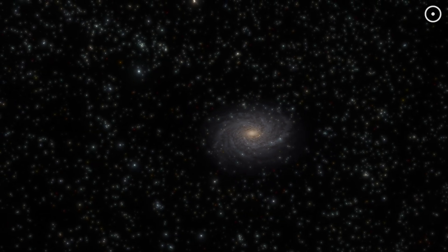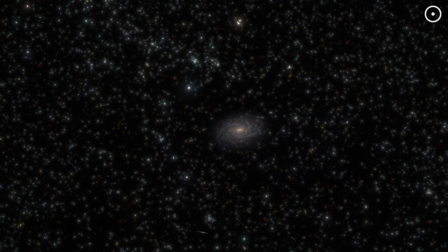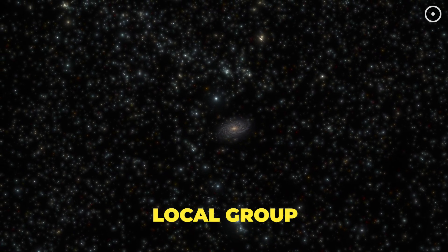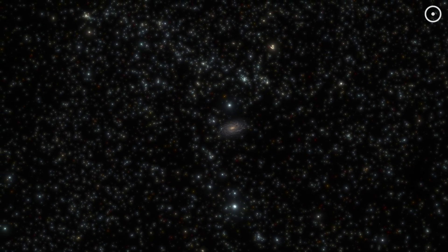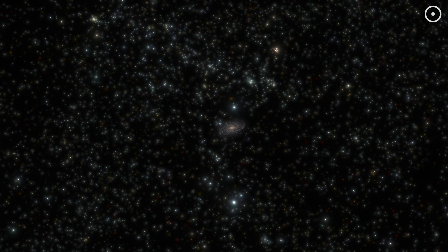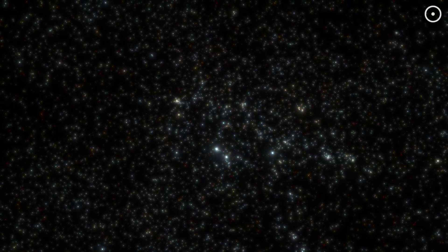But wait, our galaxy isn't flying solo through space. We're part of what astronomers call the Local Group, a cosmic neighborhood of over 50 galaxies. And see that spiral galaxy in the distance? That's Andromeda, our future roommate. In about 4.5 billion years, our galaxies will crash into each other.